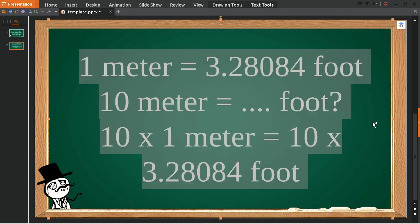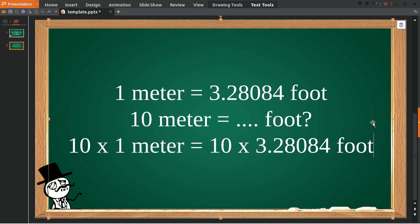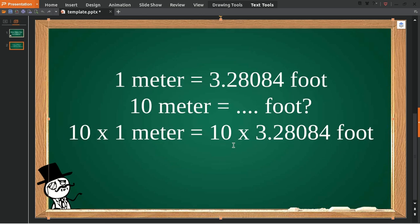Okay. Alright, now 10 meter is equal to 10 multiplied by 3.28084 foot. It's equal to 32.8084 foot.